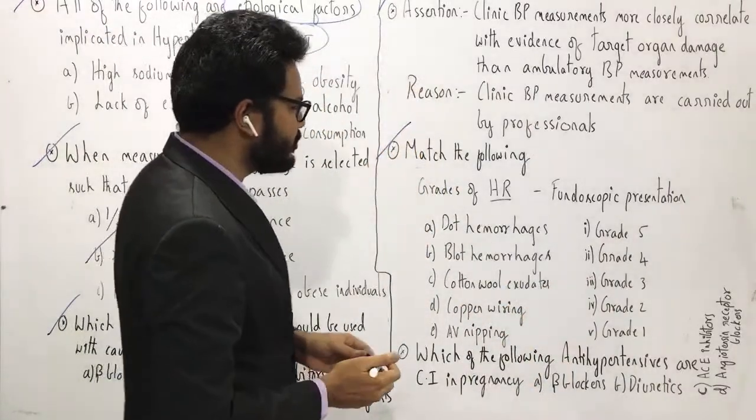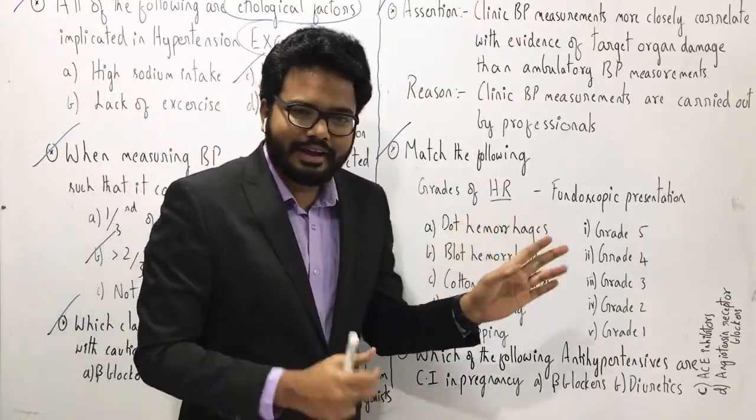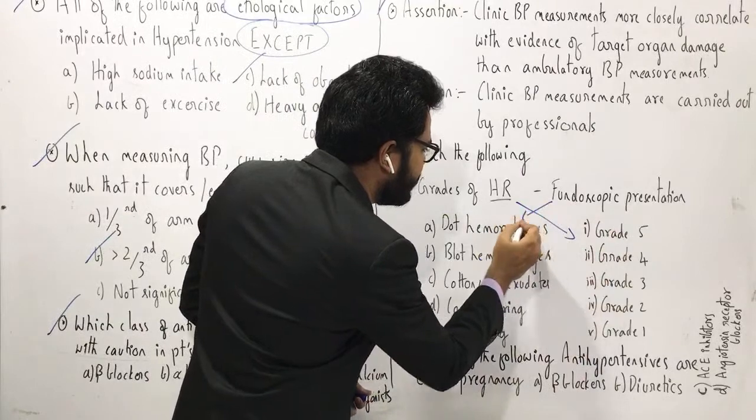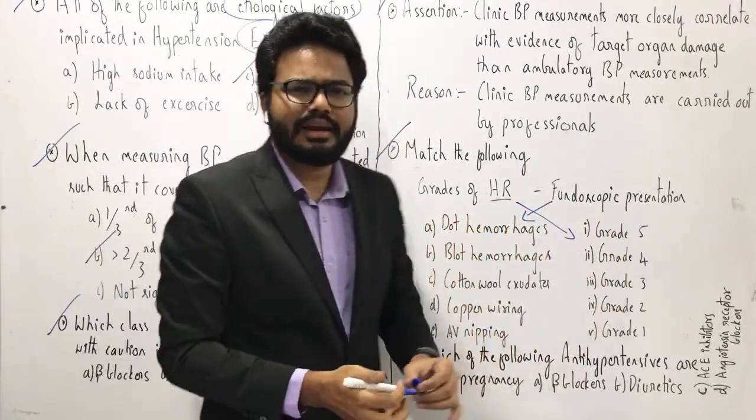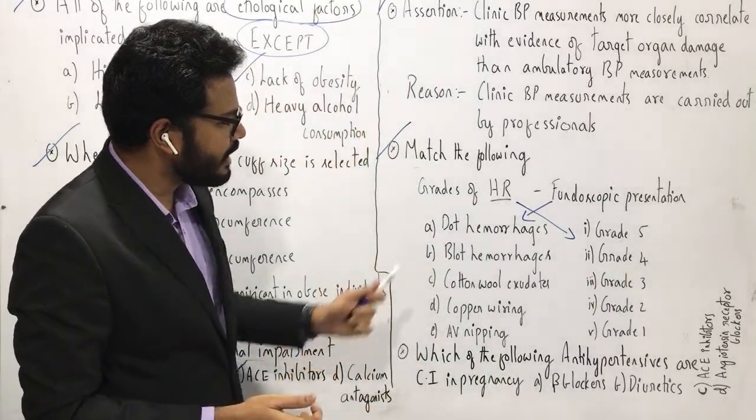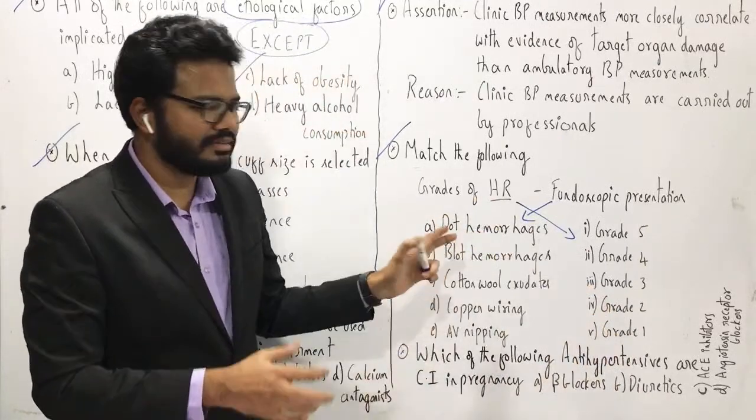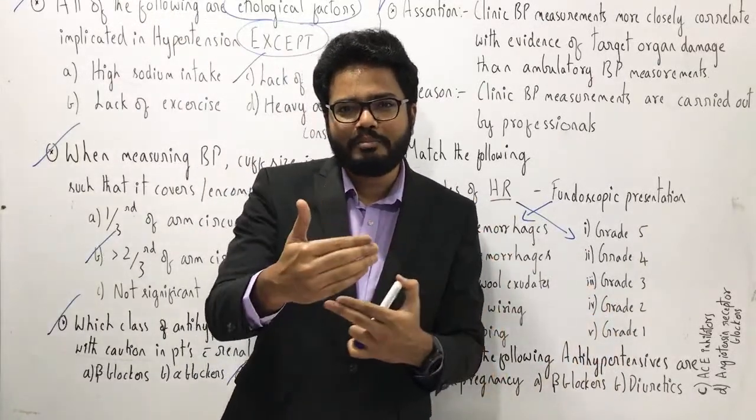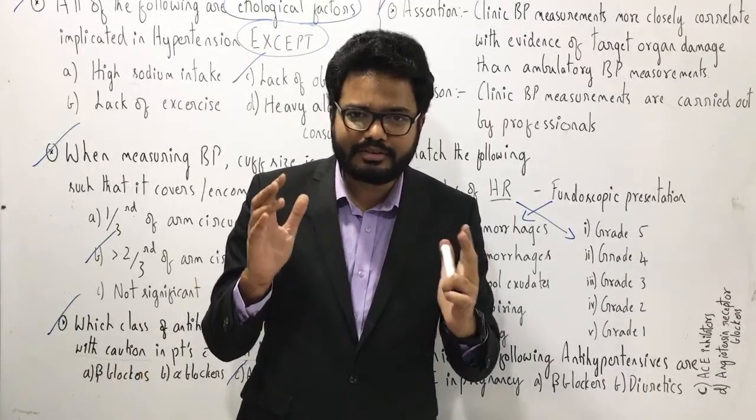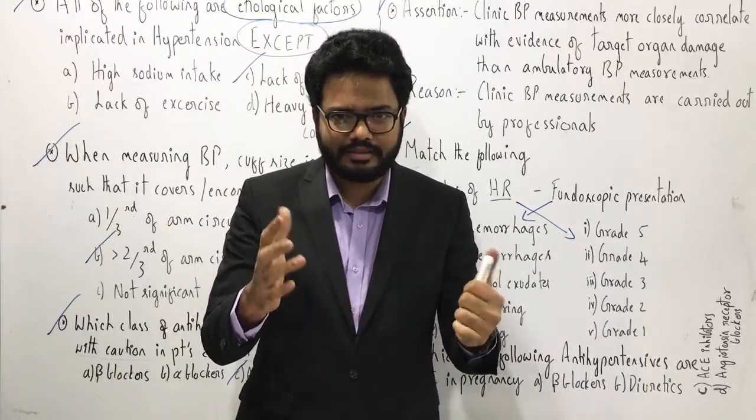Moving on to the next question, match the following. I'm sure you'll do great. So we can see various fundoscopic presentations like dot hemorrhages, blot hemorrhages, cotton wool exudates, copper wiring, AV nipping. And on the other side of the column, you can see various grading: grade 5, grade 4, grade 3, grade 2, and grade 1. So this has something to do with hypertensive retinopathy. Do match the following and post the answers in the comment section. I even posted some additional images in e-classes. Hope you guys have checked it out.